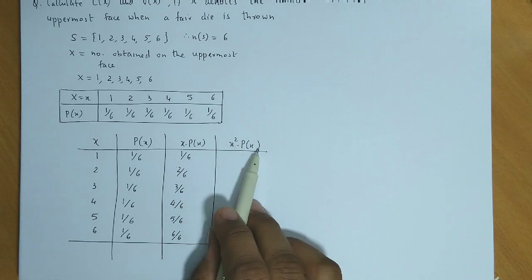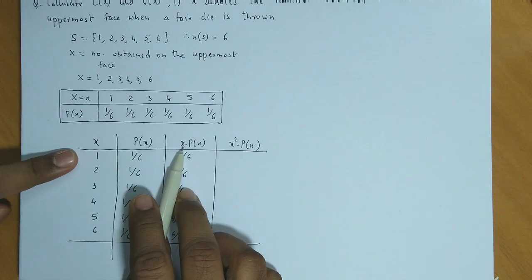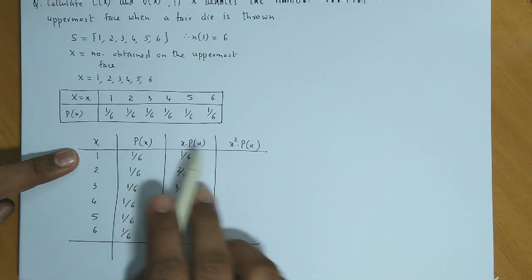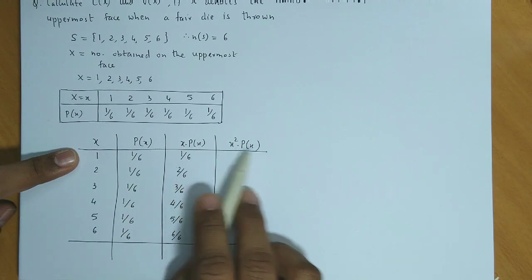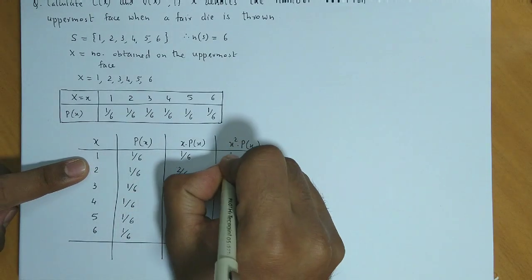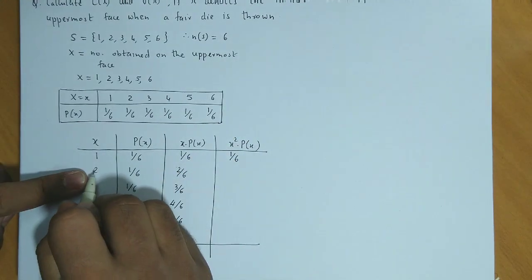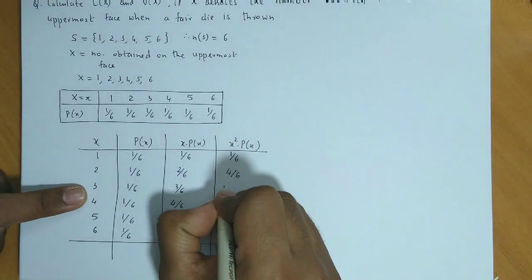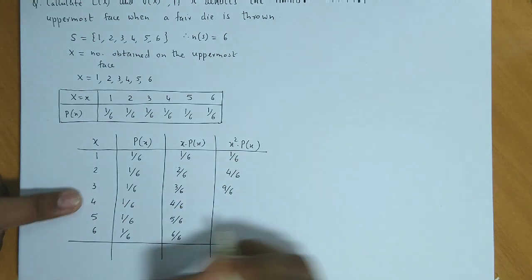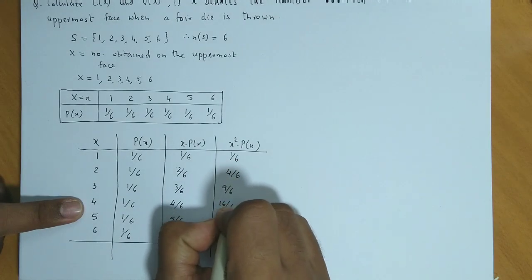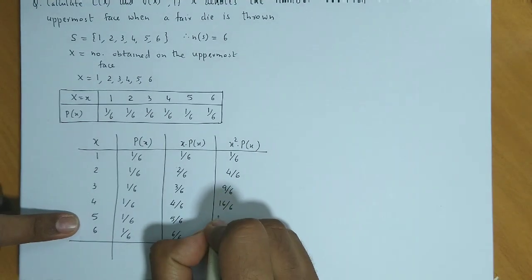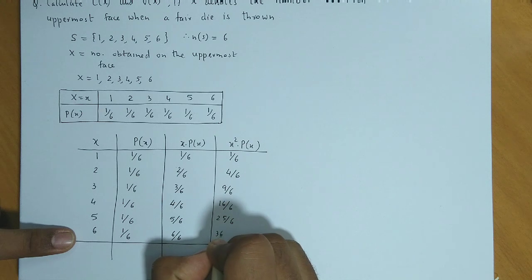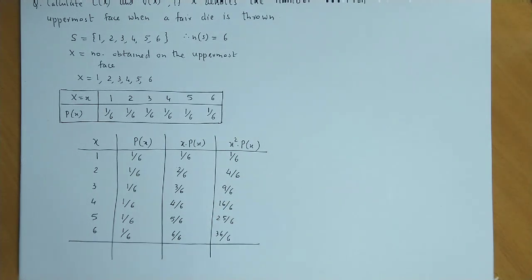Next, we compute x²·P(x). We multiply x by x·P(x) to get x²·P(x): 1 × 1/6 = 1/6; 2 × 2/6 = 4/6; 3 × 3/6 = 9/6; 4 × 4/6 = 16/6; 5 × 5/6 = 25/6; 6 × 6/6 = 36/6.